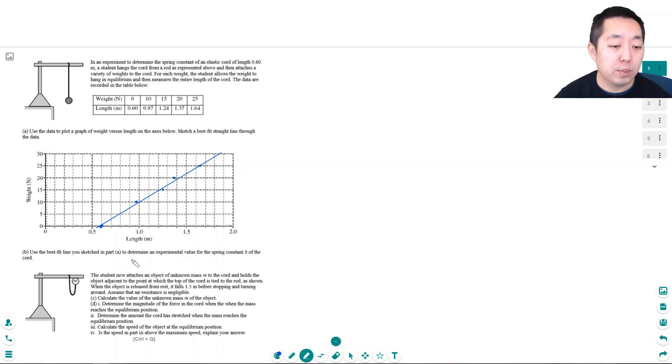So use the best fit line you sketch of part A to determine experimental value for the spring constant K of the chord. Well, so in general, what we need is, we're looking at the equation that F is equal to K delta X, or KX for some people. That's sort of the force. And so the weights are the forces.